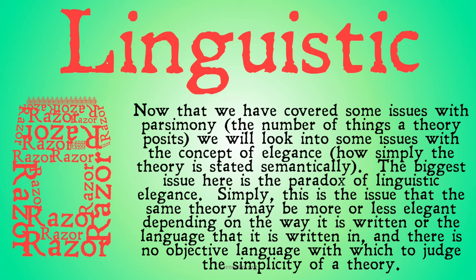Now that we have covered some issues with parsimony — the number of things that a theory posits — we're going to look at some of the issues with the concept of elegance: how simply the theory is stated semantically. The biggest issue here is the paradox of linguistic elegance. Simply put, this is the issue that the same theory may be more or less elegant depending on the way it was written, or the language it is written in, and that there is no objective language with which to judge the simplicity of a theory.